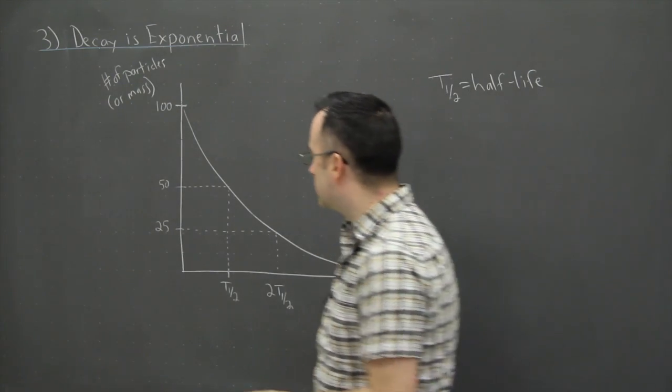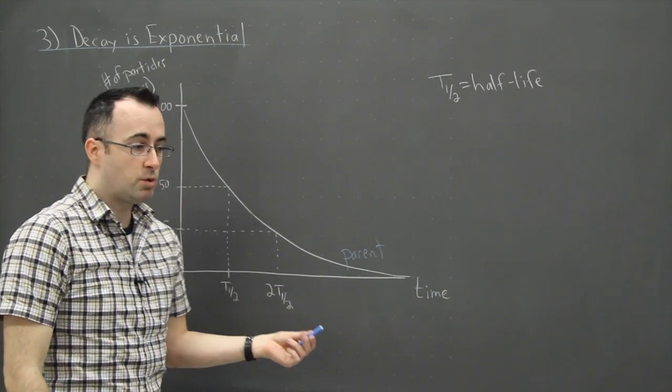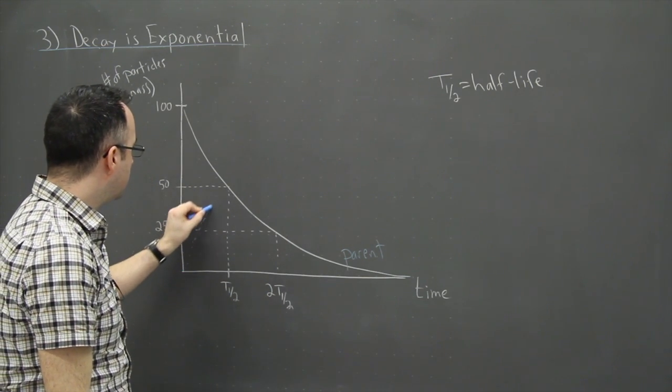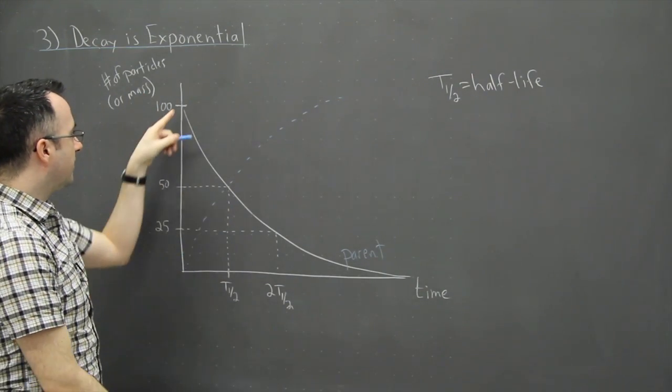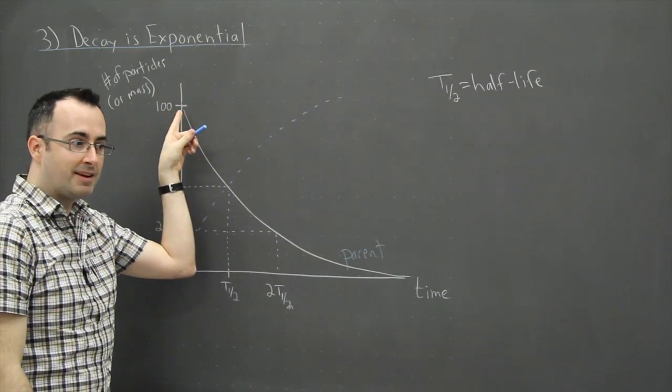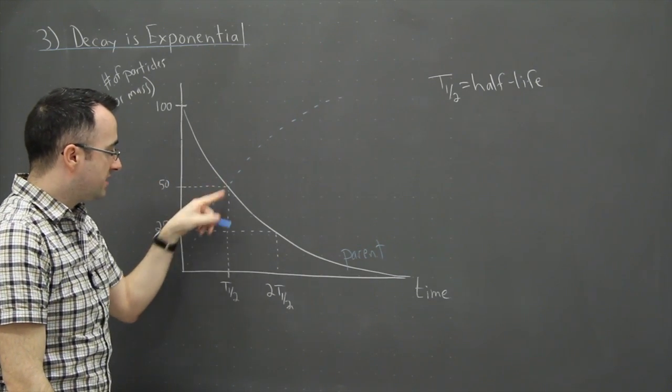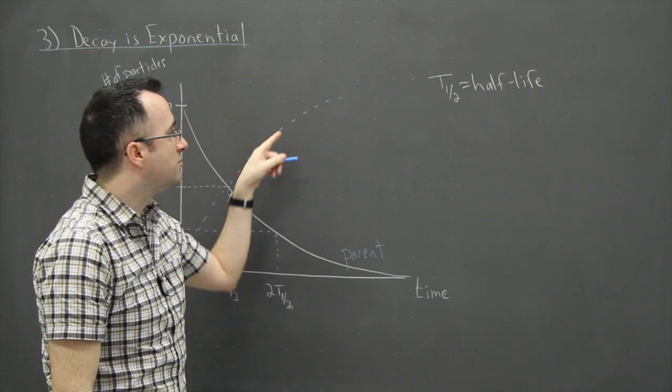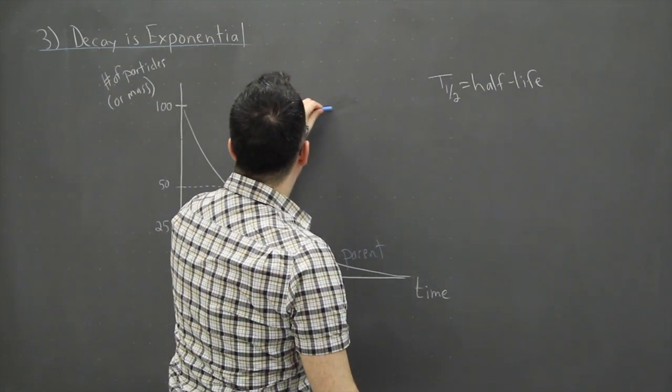So sometimes you can also think about the graph of what the daughter looks like. So whatever particle that we're making here, in this case right here, we can actually say then that the daughter actually does something like this. In other words, it does the opposite, right? If there's lots and lots, if there's 100% of this stuff, then there's no daughters. If there's 50% of these, then there's probably 50% daughters. And as you get less and less of these, there's more and more daughters. Notice the daughters shouldn't actually reach 100, right?